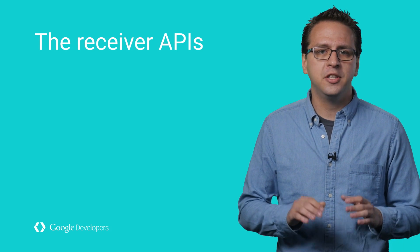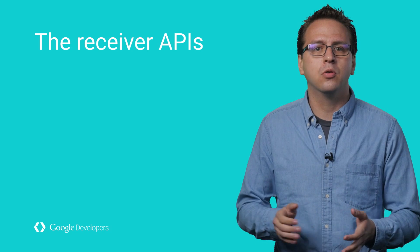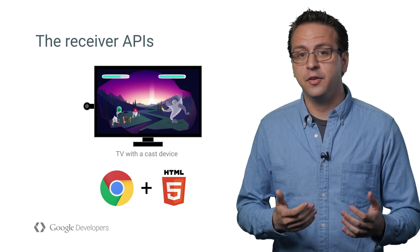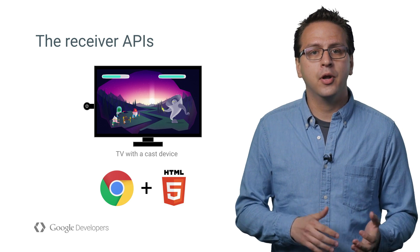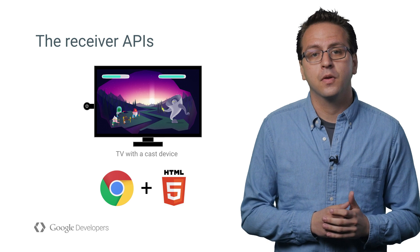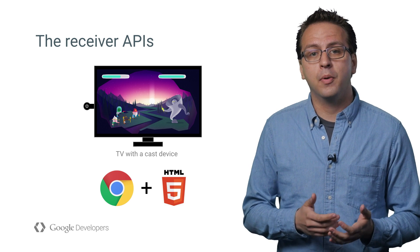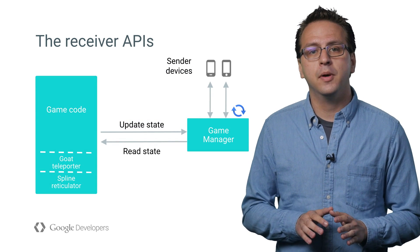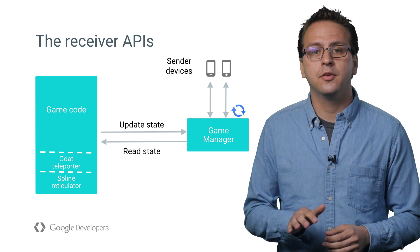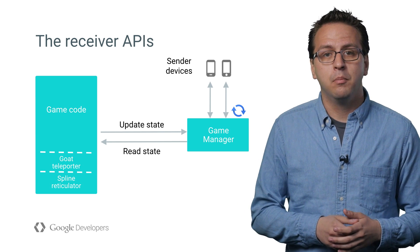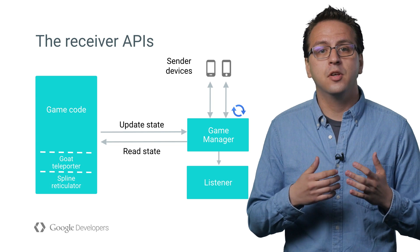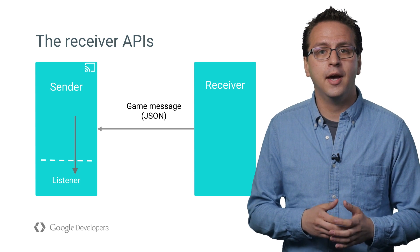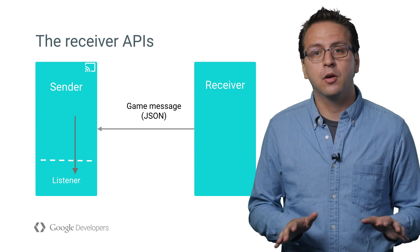Now let's look at the receiver APIs for the HTML5 game running on the Google Cast device. This is where the majority of the game code lives. To get started, follow instructions on our dev site about how to set up a receiver and then construct a Game Manager object. Unlike the sender APIs, all operations you perform are synchronous since everything happens on the same device. When you update any piece of Game Manager state, a message will be sent automatically to all connected senders, letting them know of the change. Much like the Sender APIs, you can set up listeners to get notified of state changes and game messages. To send game messages to players, you just have to specify the player ID and the message.